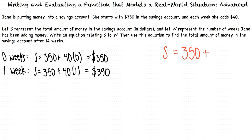After two weeks, the total amount of money will be S equals 350 plus 40 times two, because she will have put two weekly deposits of $40 in, and this equals 430.